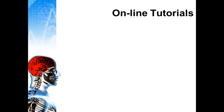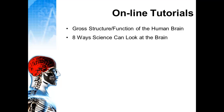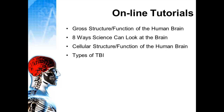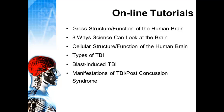Some of the online tutorials — most of them — are identified on this slide. We're going to go through the gross structure and function of the human brain to understand how the brain is put together. We're going to look at eight different ways that science can examine the brain, the cellular structure and function of the brain, the types of traumatic brain injury, blast-induced traumatic brain injury, manifestations of TBI and post-concussion syndrome, as well as diagnosis and treatment modalities for TBI.